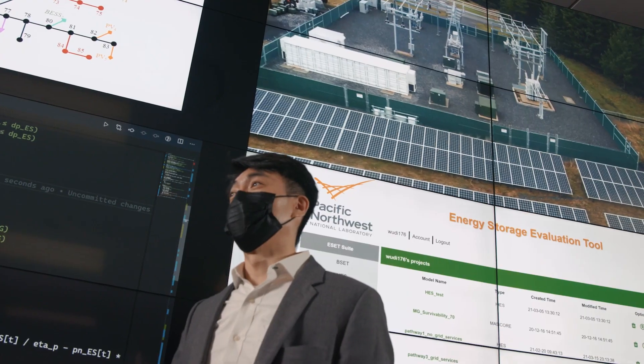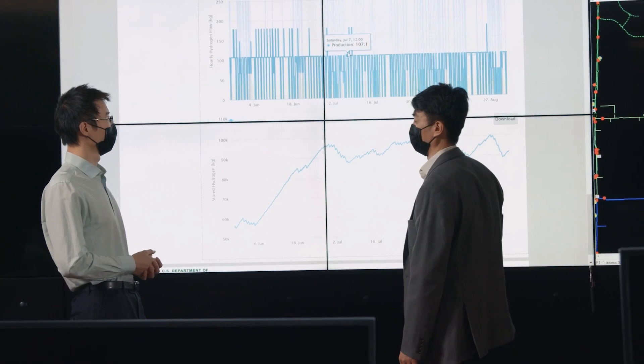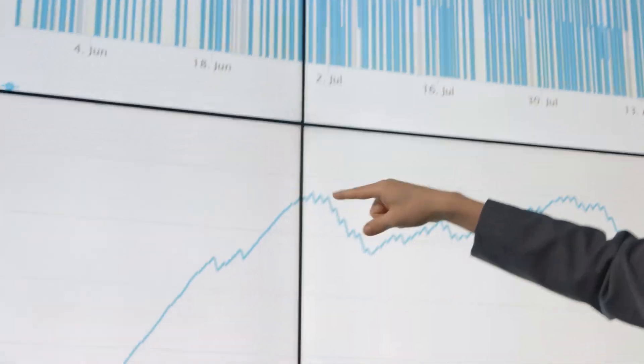Meanwhile, PNNL's computer models show how batteries can be used to provide grid services that reliably keep the power flowing.